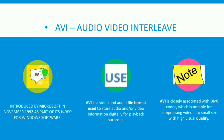The first topic is AVI. The full form is Audio Video Interleave. AVI was introduced by Microsoft in November 1992 as part of its Video for Windows. It is a file format used to store audio and video information digitally for playback purposes. AVI is closely associated with DivX codec, which is notable for compressing video into small size with high visual quality.